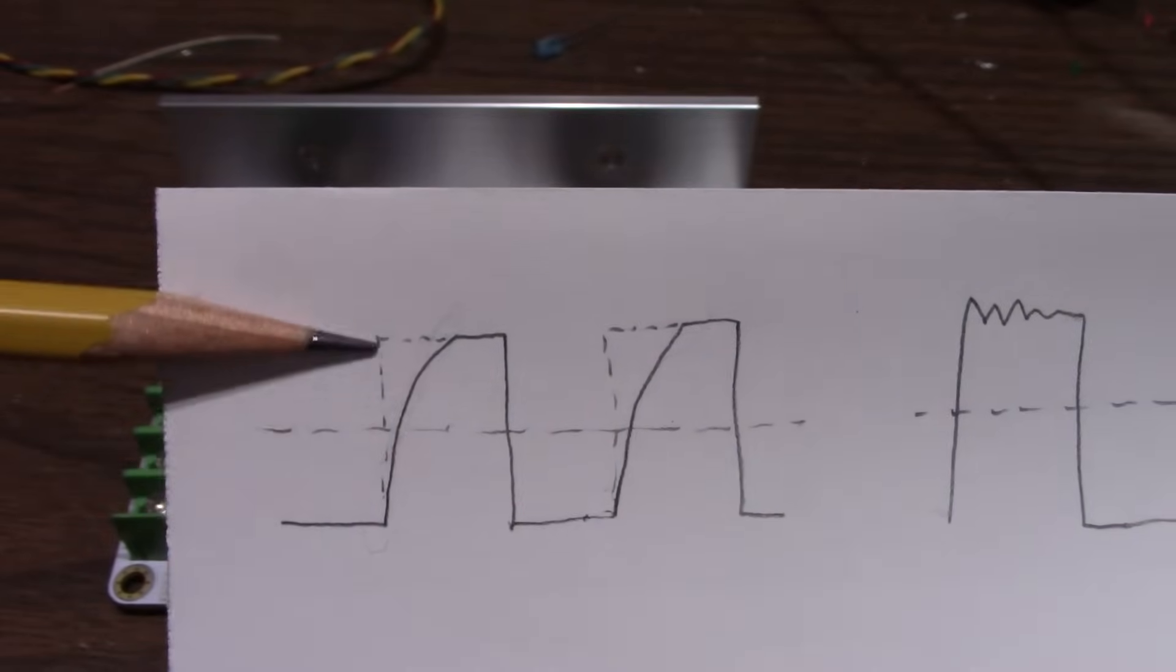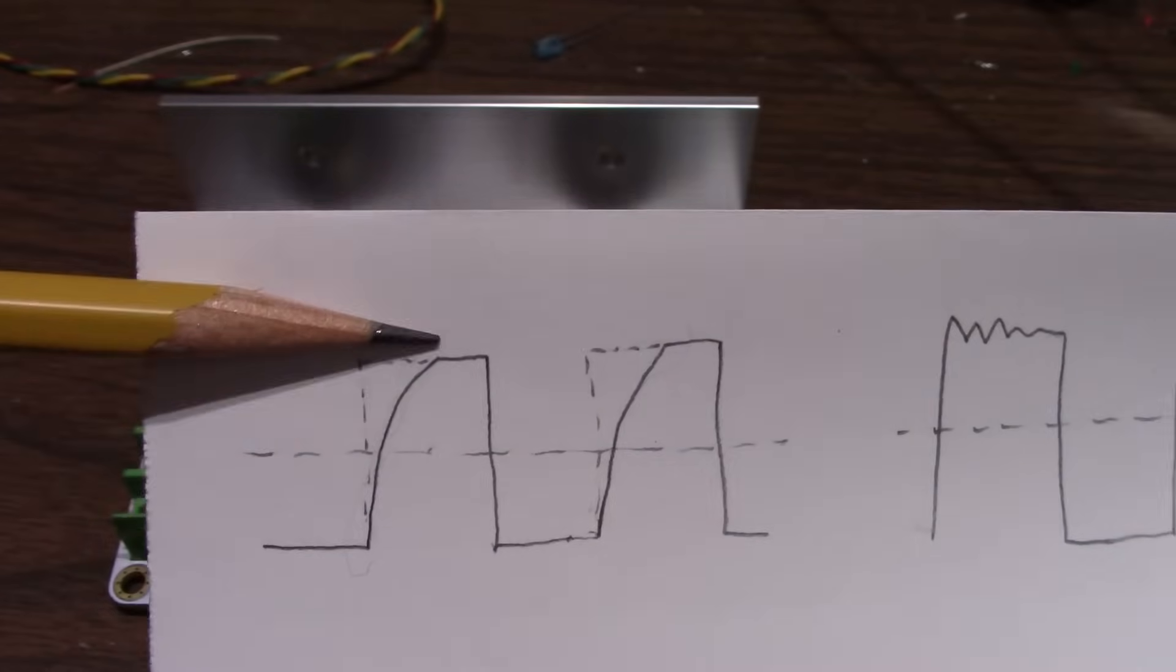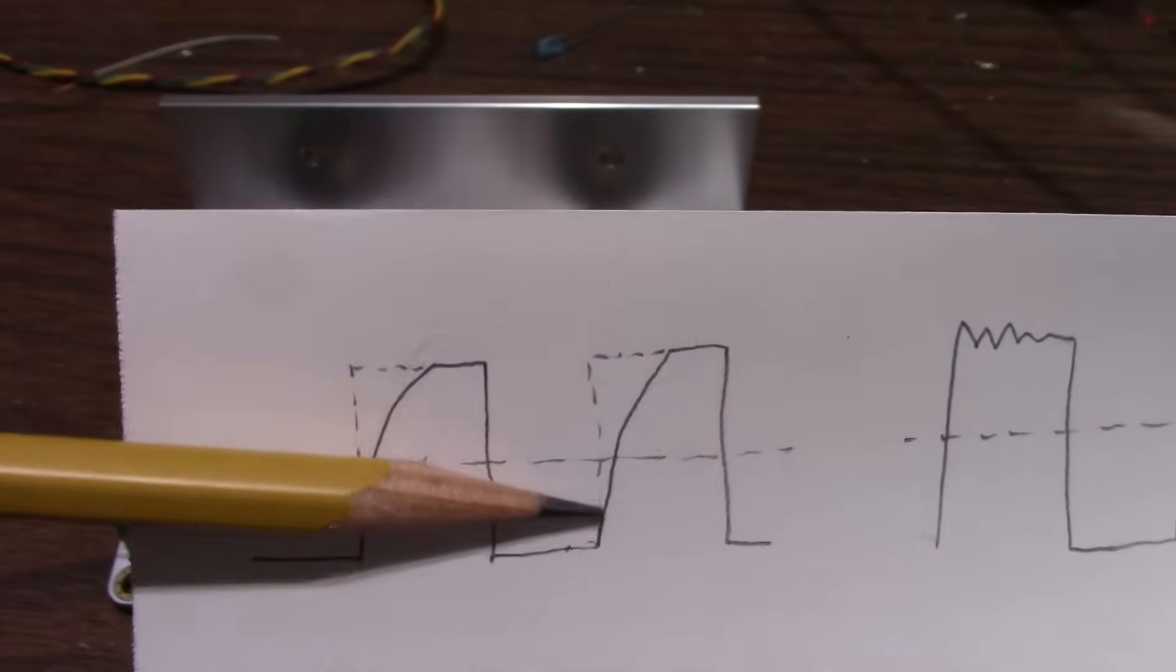This is supposed to be a square wave but it looked like this. The fall time was okay though, just the rise time.